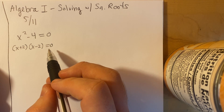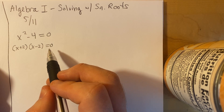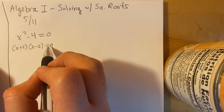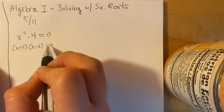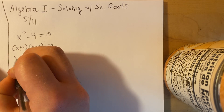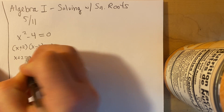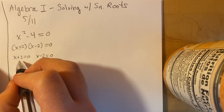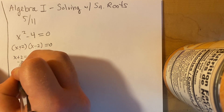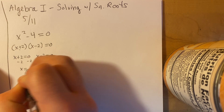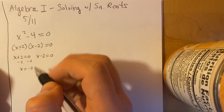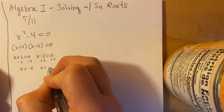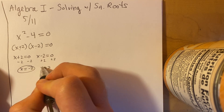Using the zero product property, we know that if this thing is 0 then the answer will be 0, and if this thing is 0 then the answer will be 0. So we can write x plus 2 equals 0 and x minus 2 equals 0. Subtracting 2 on both sides gives x equals negative 2, and adding 2 on both sides gives x equals 2. So there are two answers to this equation.